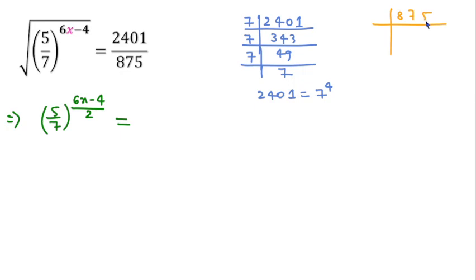This is divisible by 5, giving 175. 175 is divisible by 5, giving 35. And 35 is divisible by 7. So we can write 875 = 5^3 × 7.